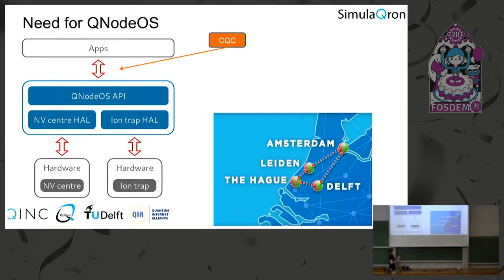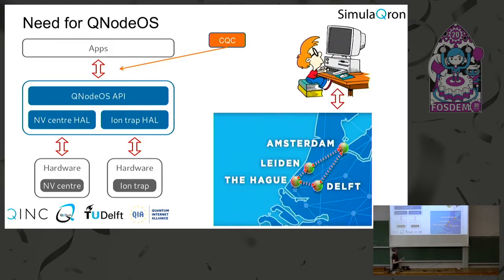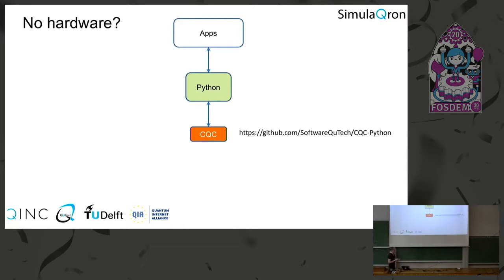CQC specifies what instructions an application should send to the QnodeOS. Our goal is that the network we're building will be compatible with this CQC interface, so you could write your own application and communicate with the network using CQC. CQC is essentially an instruction set encoded in a binary format — not meant to be used directly — but we've written libraries that enable you to write applications more easily, which then generate these CQC instructions for you.